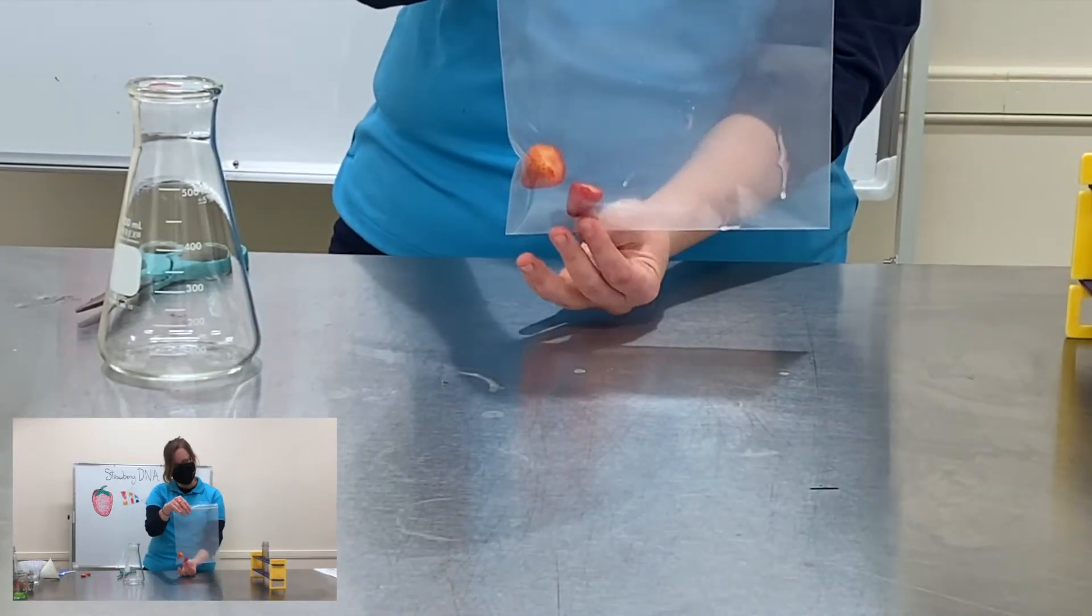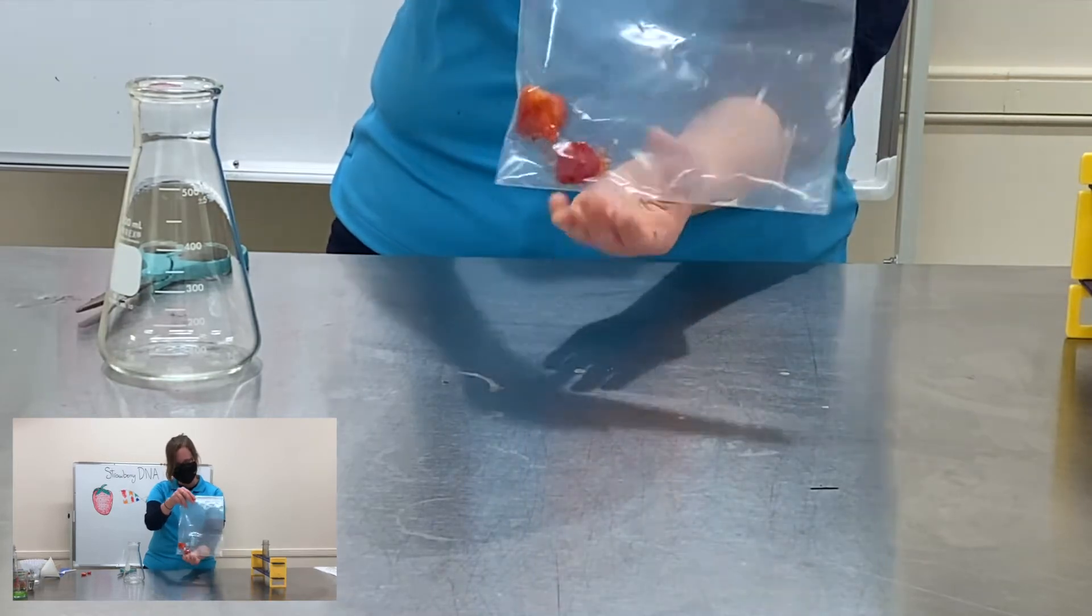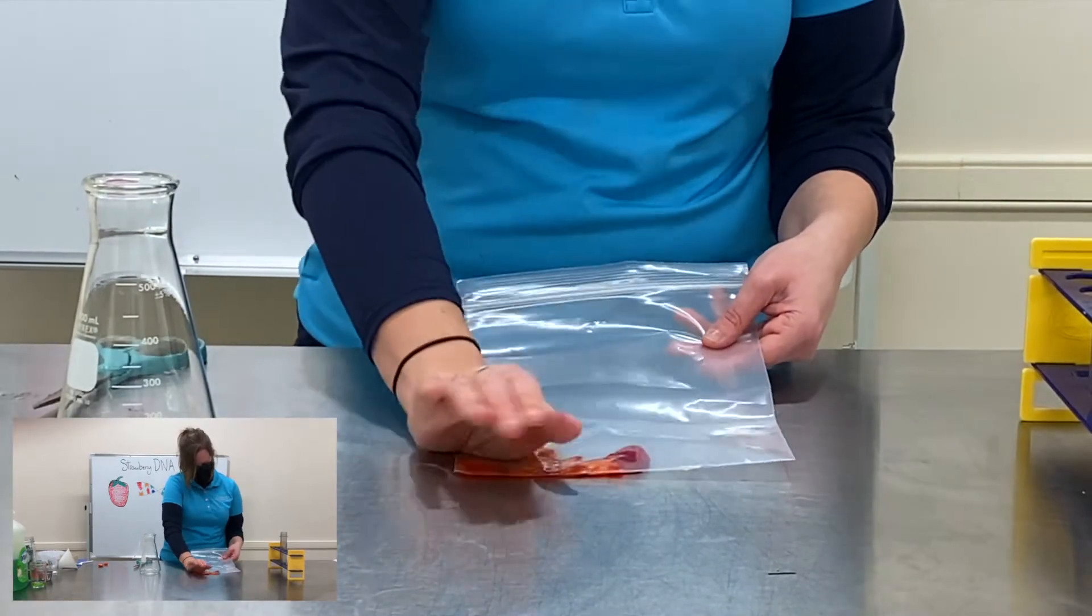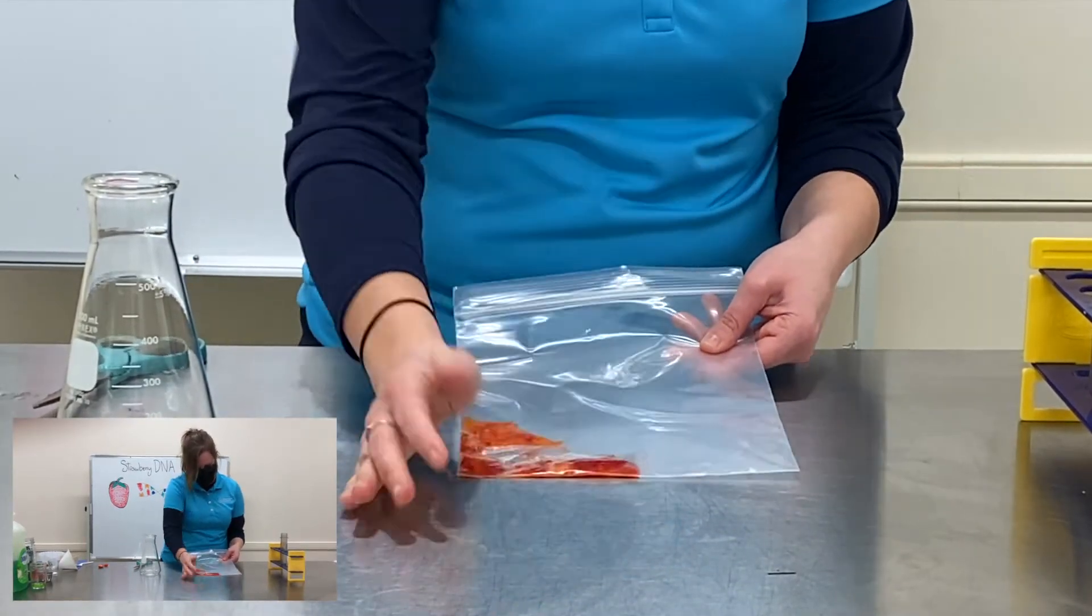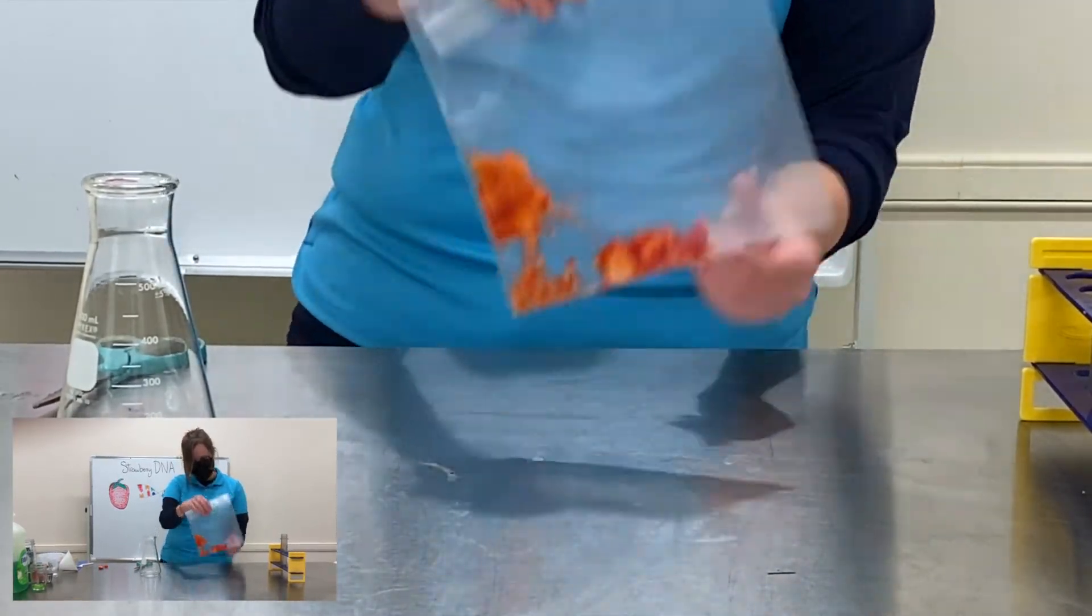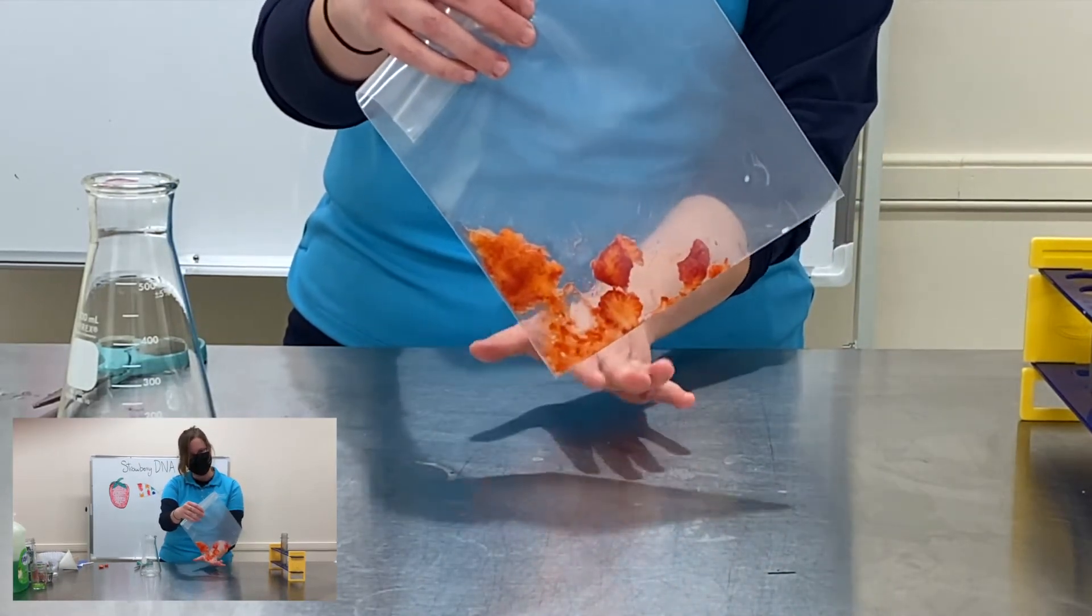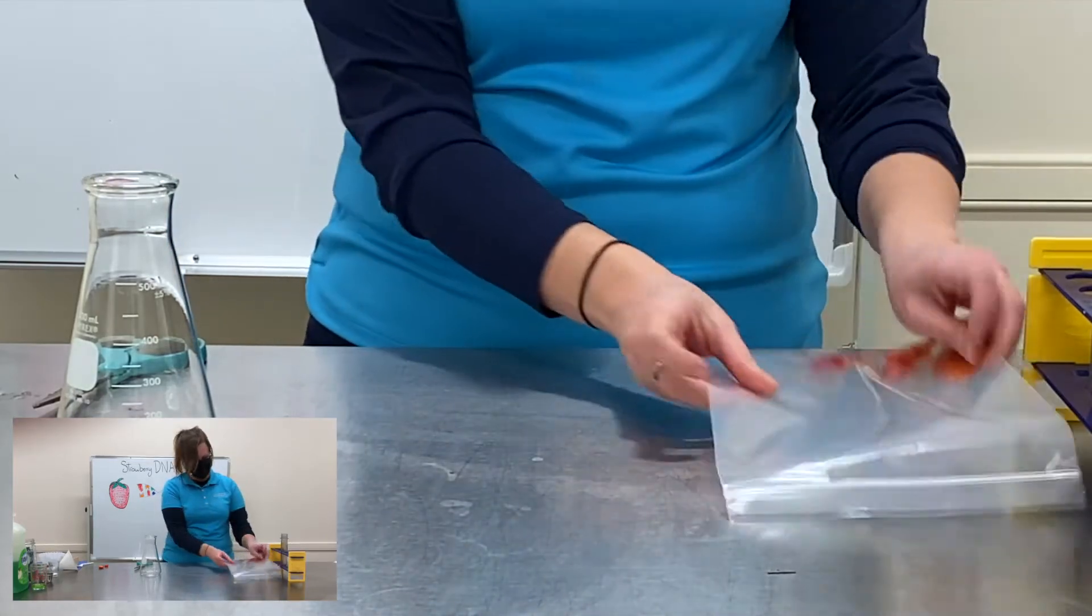I'm gonna seal the bag so nothing can escape because I am now gonna squish and smash these strawberries. So I'm squishing my strawberries in my bag just till I start to see some of this red liquid and these kind of chunks of strawberry. I'm not gonna worry about making it perfect just so I start to have this consistency. I'm gonna set this aside.